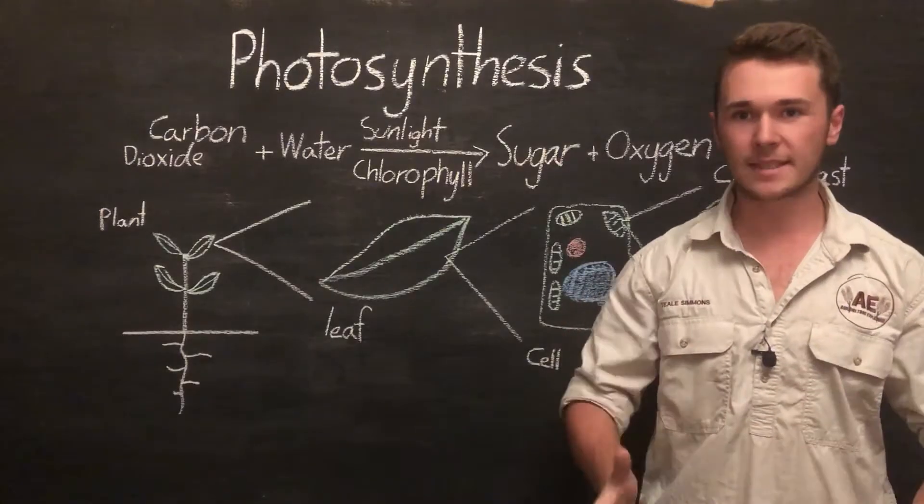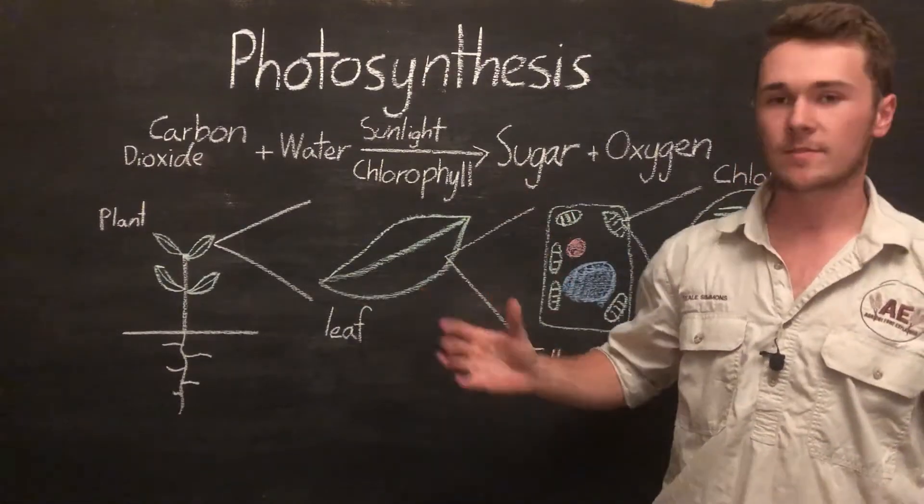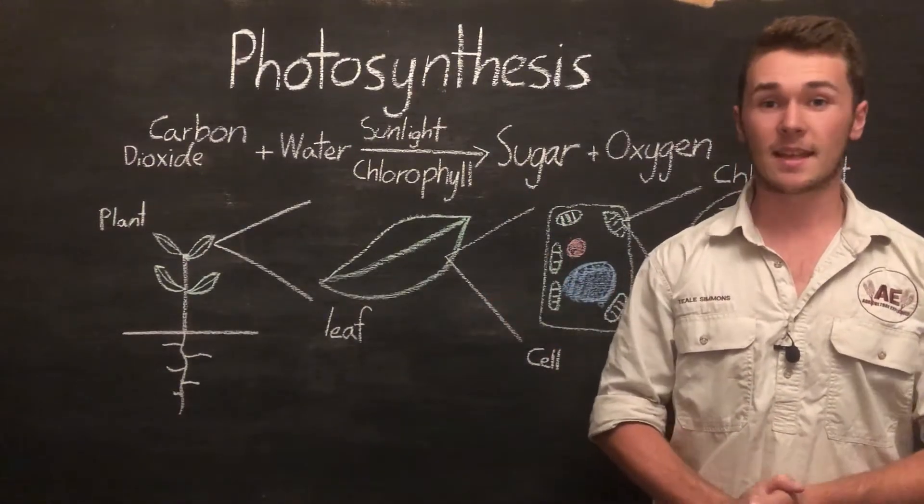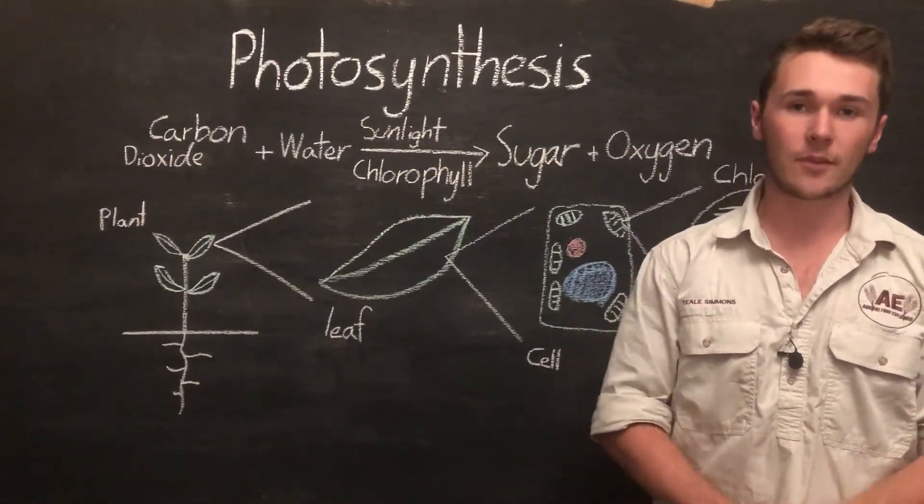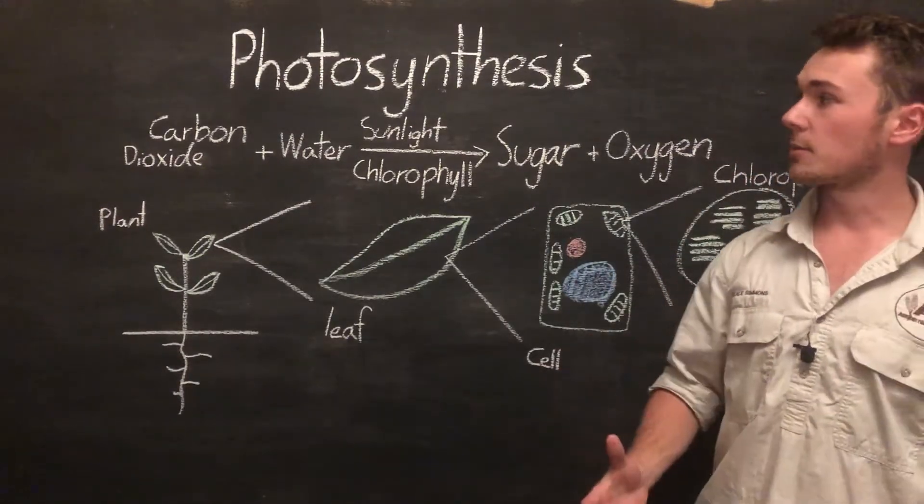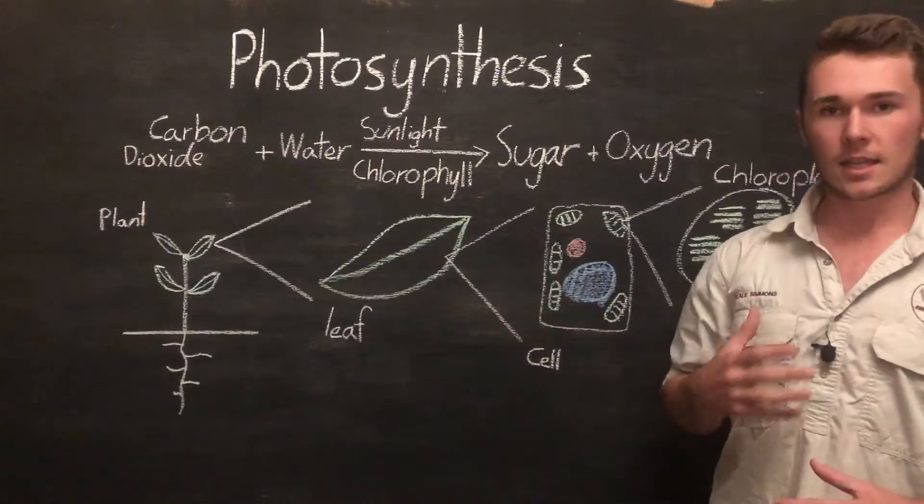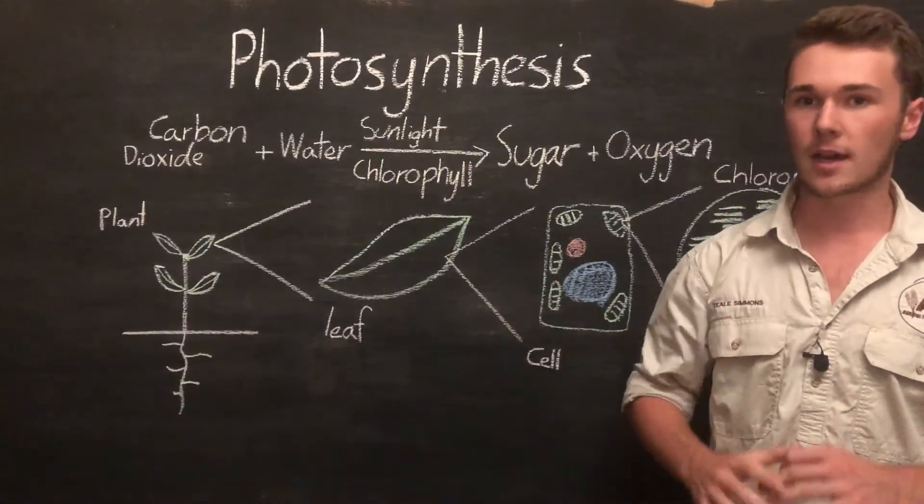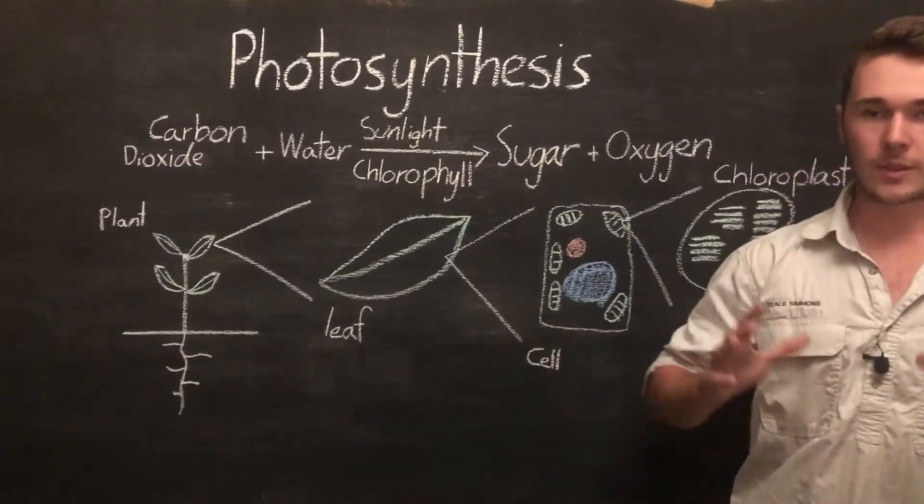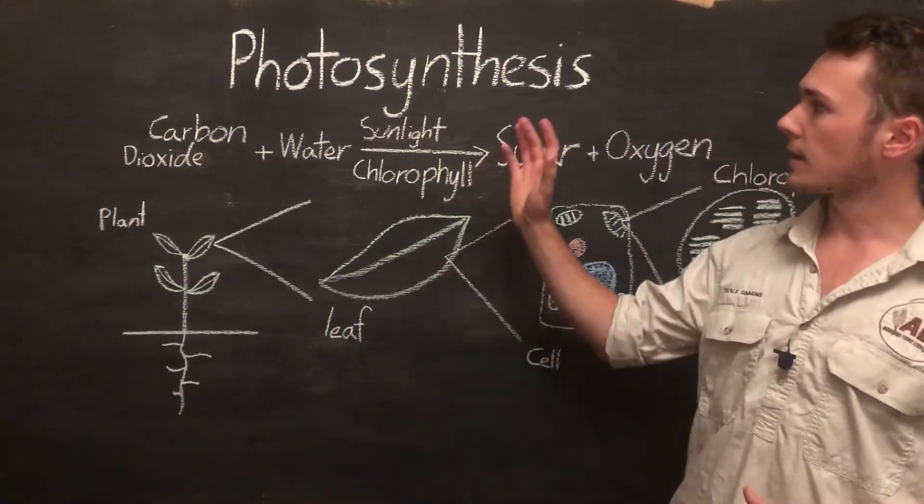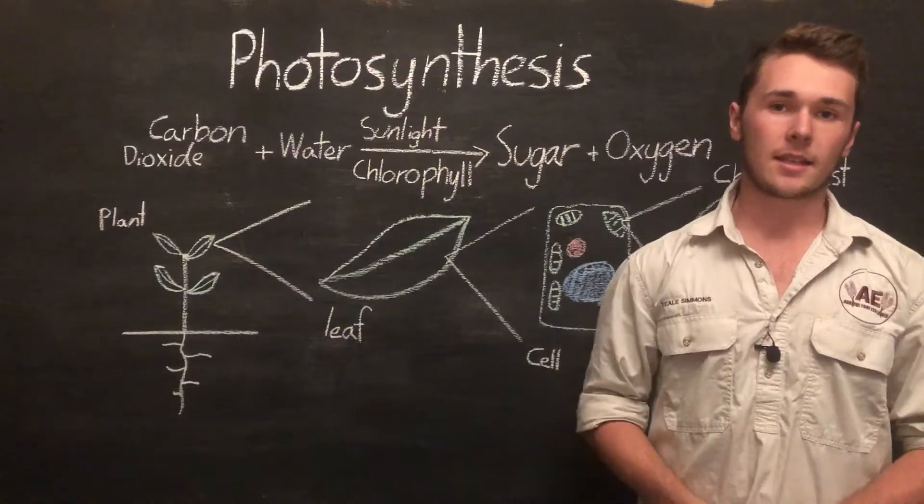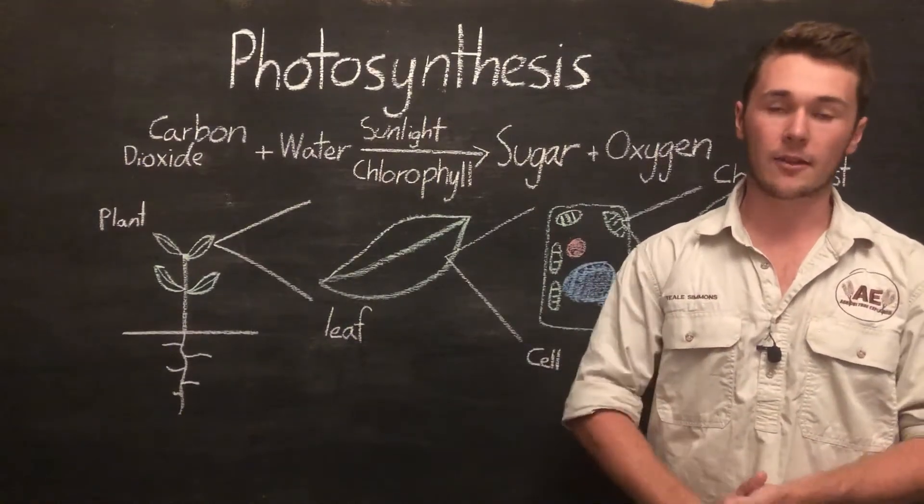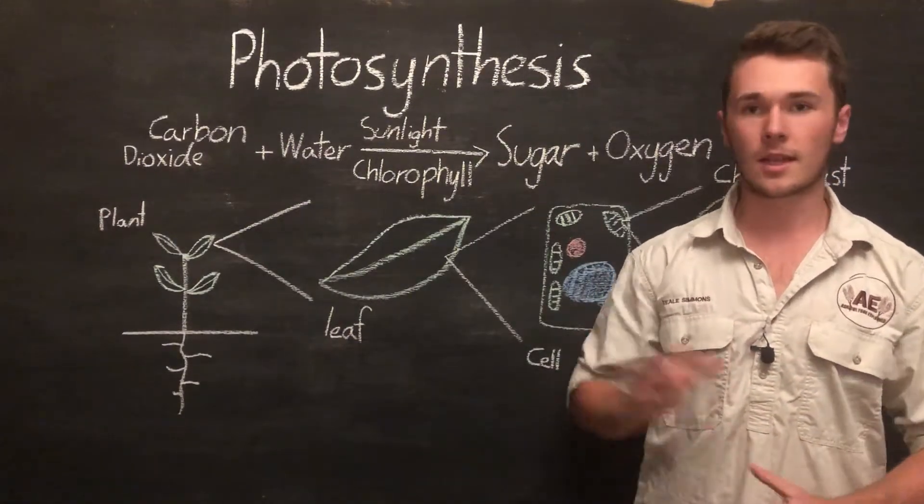Plants can undergo this amazing process called photosynthesis. Essentially what they're doing is they're making their own food from raw materials in their environment. So as farmers I think it's really worthwhile understanding this process and how the inputs into our farm affect this process. So today in this video we'll be looking at exactly how photosynthesis works and the process that the plants undergo for this reaction at a basic level.